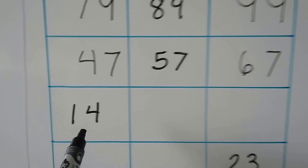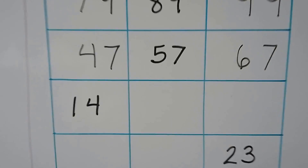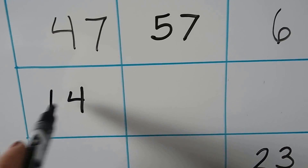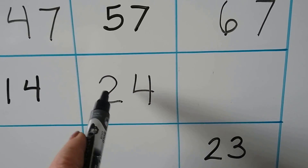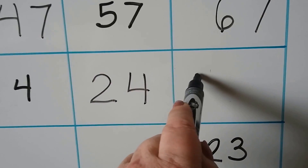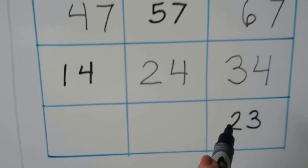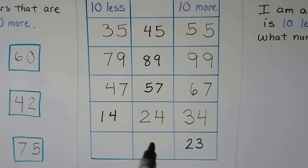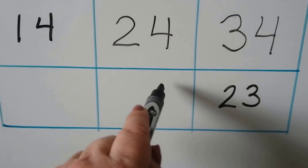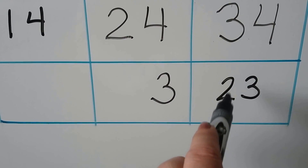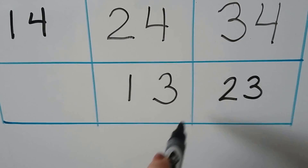Now here it's showing the number that is 10 less, and we have to find 10 more and 10 more than that. 1 more 10 would give a 2 in the tens place and the ones would stay the same. And 10 more than that, we'd have 1 more 10 — so it would be 3 tens — and the ones stay the same, so we have 34.